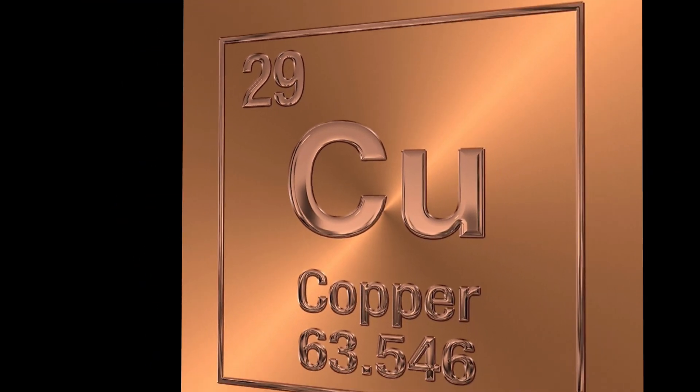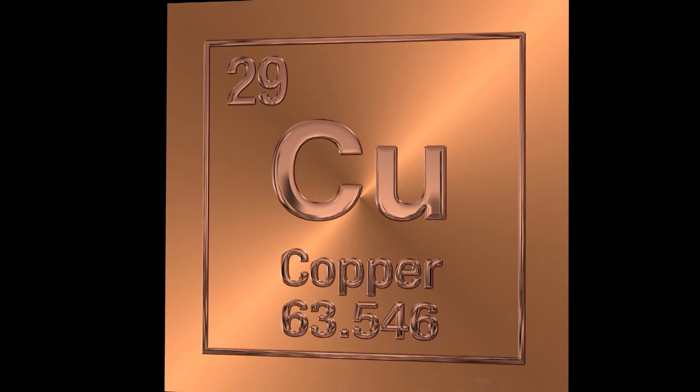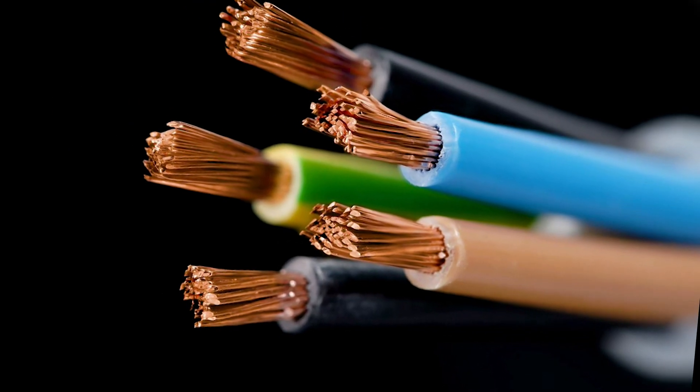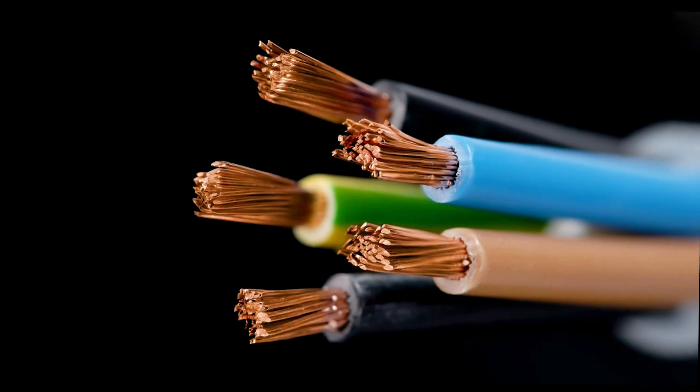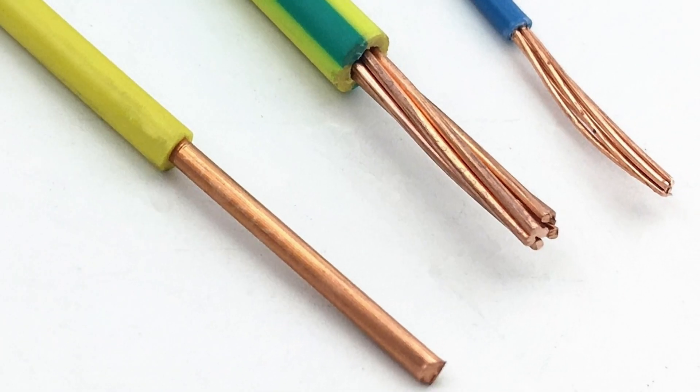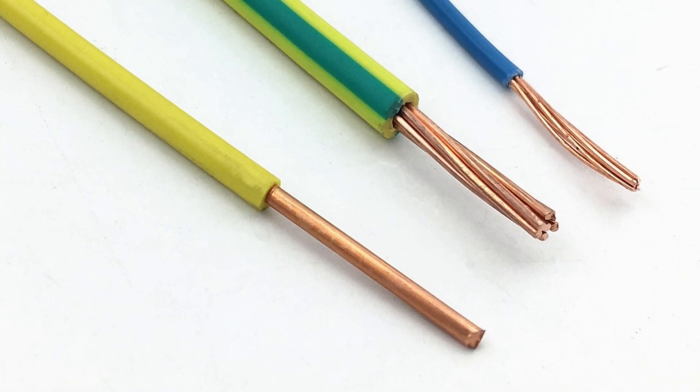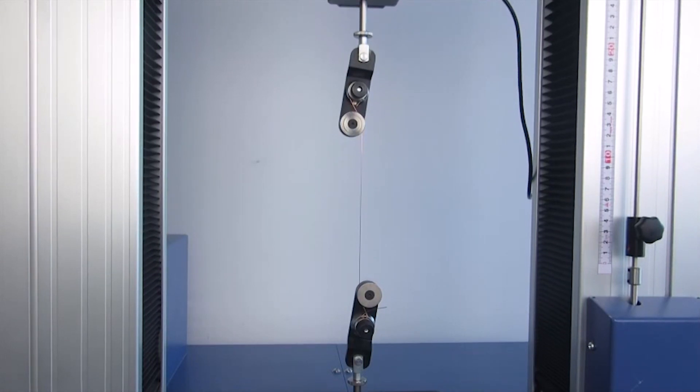Copper is the best conductor of electricity. Though silver is a better conductor of electricity, copper wire is more widely used. This is because it has a greater capacity for electrical conductivity and mechanical strength.